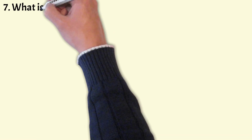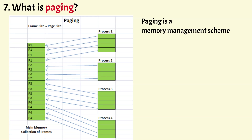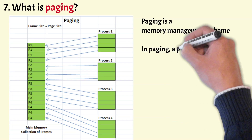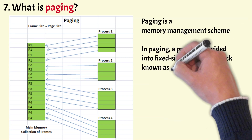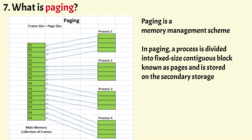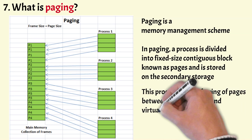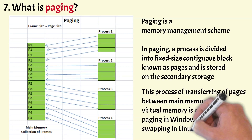What is paging? Paging is a memory management scheme in which data is stored to and retrieved from secondary storage for use in main memory. The part of secondary storage used for paging is known as virtual memory. In paging, a process is divided into fixed-size blocks known as pages stored on secondary storage. Main memory is also divided into fixed-size blocks known as frames. Pages are mapped into frames, and frames must be the same size as pages for maximum memory utilization. This transfer of pages between main memory and virtual memory is called paging in Windows OS or swapping in Linux.